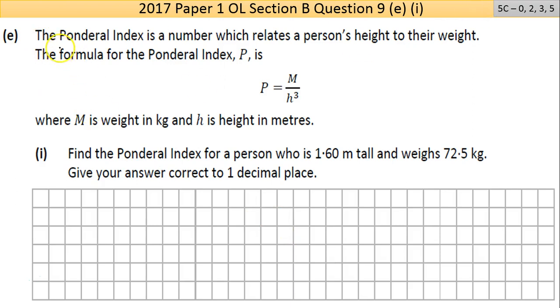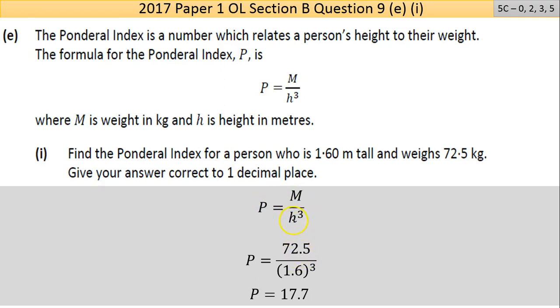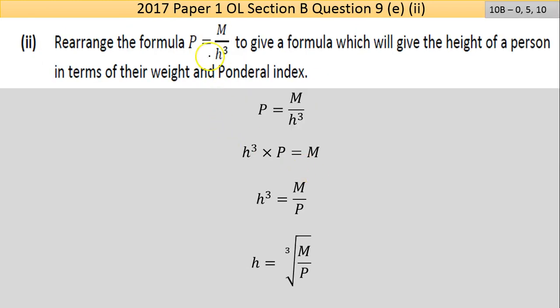Part E: The Ponderal Index is a number which relates a person's height to their weight. The formula for this index P is P equals the person's mass divided by their height cubed: P = M/h³. Part E(i) says find the Ponderal Index for a person who is 1.60 meters tall and weighs 72.5 kilograms. Give your answer to one decimal place. Putting the values into the calculator: 72.5 divided by 1.60³ gives 17.7.